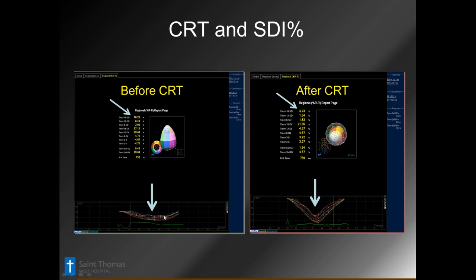Same patient after the CRT — literally the next day or two. The 3D data set shows a nice bell curve, everything's peaking, QRS is shorter, and the SDI is actually within normal limits. It would be great if they all did this — they don't — but it's very sensitive and can be very good confirmatory information when you're doing certain types of work on patients and want to be sure they're optimized.